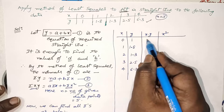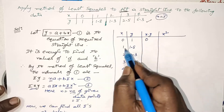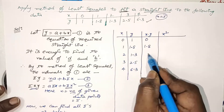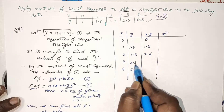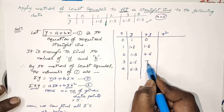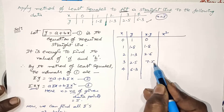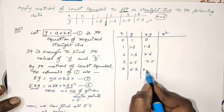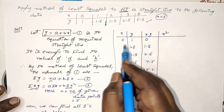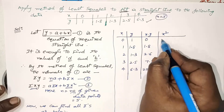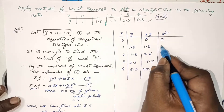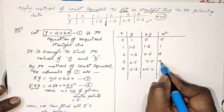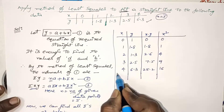Computing xy values: 0×1 = 0, 1×1.8 = 1.8, 2×1.3 = 2.6, 3×2.5 = 7.5, and 4×6.3 = 25.2. Squaring the x values: 0² = 0, 1² = 1, 2² = 4, 3² = 9, 4² = 16.